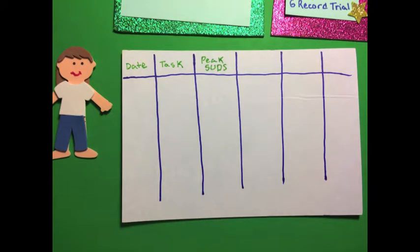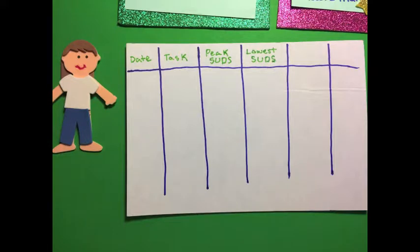Column 3 is for your peak SUD score, your subjective units of distress score. So this is the maximum level of distress you feel. You're aiming for anywhere from like a 3 to a 5. Your lowest SUD score is your level of distress at the end of the trial. And this is as low as your distress got, hopefully to a 0 or a 1.